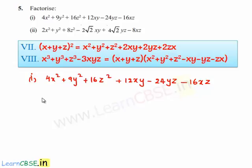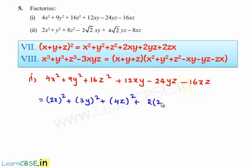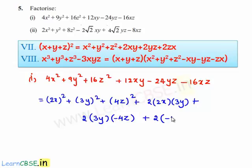The given polynomial can be written in the form: 2x whole square plus 3y whole square plus minus 4z whole square, plus 2 times of 2x multiplied by 3y, plus 2 times of 3y multiplied by minus 4z, plus 2 times of minus 4z multiplied by 2x.